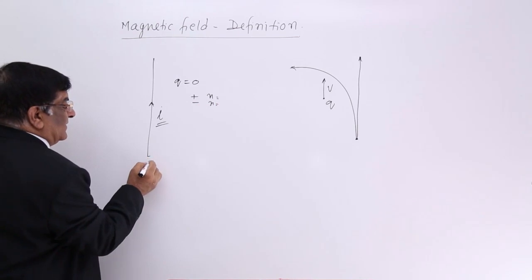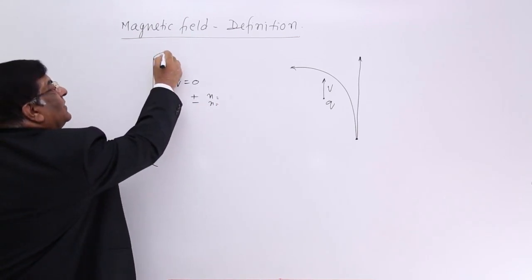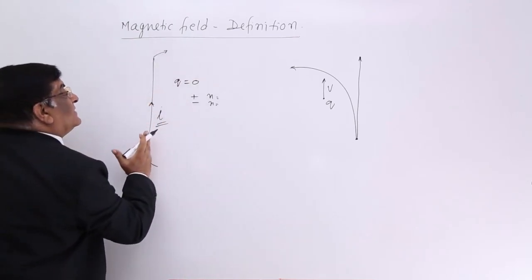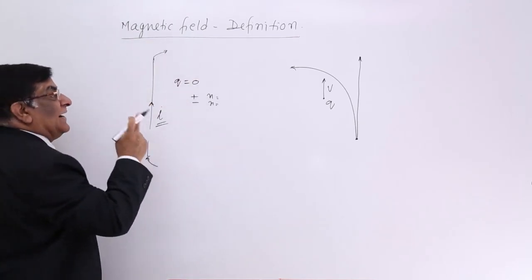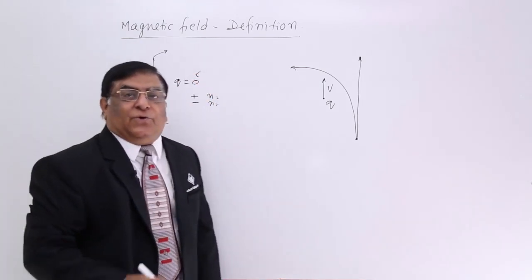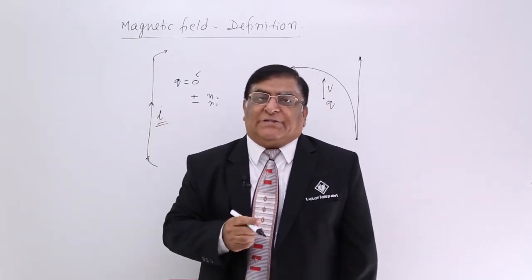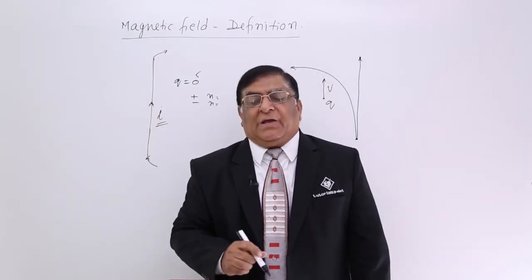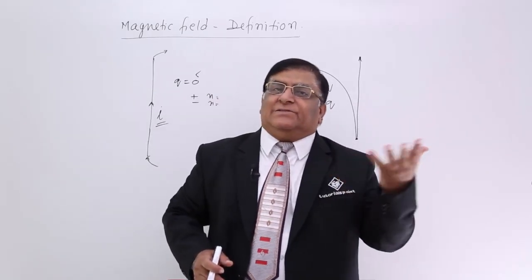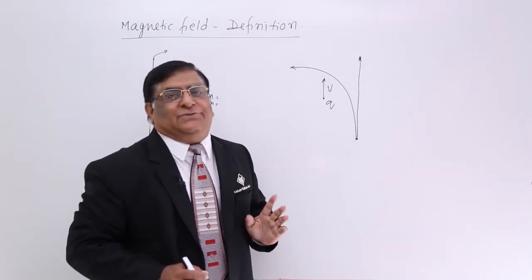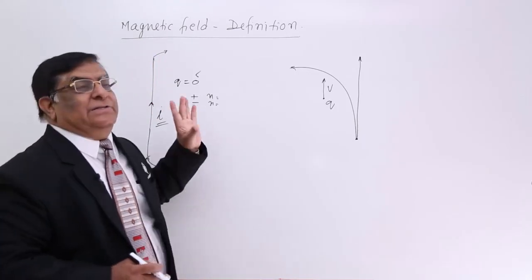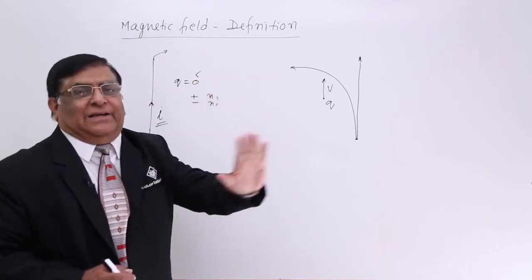What happens is one electron enters and one electron leaves, so the net charge is zero again. Electrons are moving, but at any time the net charge always remains zero. So remember: a current-carrying conductor has zero net charge. If its charge is zero, the electric field it creates is also zero. Because electric field is proportional to q over r squared, and q is zero, so the electric field created by this conductor is zero — it is not capable of creating any electric field.